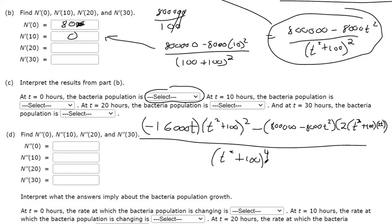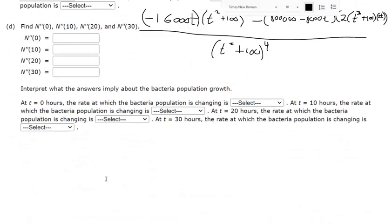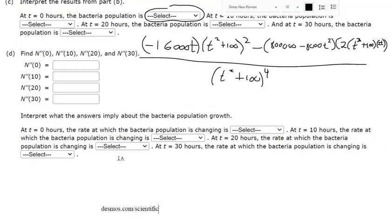And it's all over this bottom function, which is already being squared, but we need to square it again because that's what the quotient rule tells us to do. So the denominator is now t squared plus 100 to the fourth. Now you could clean this up. I'm sure there's a lot of terms that could cancel in the numerator and denominator. Or if it's easier for you, you could just stop here and use a calculator.